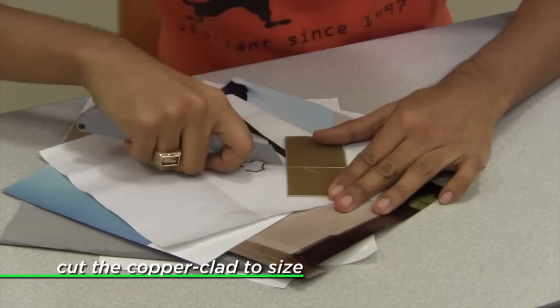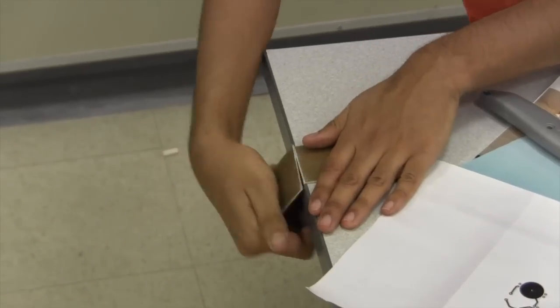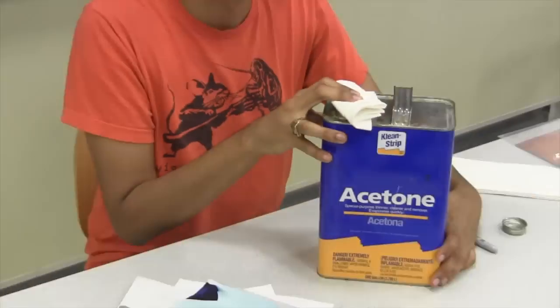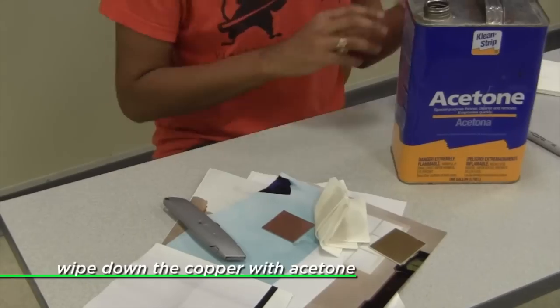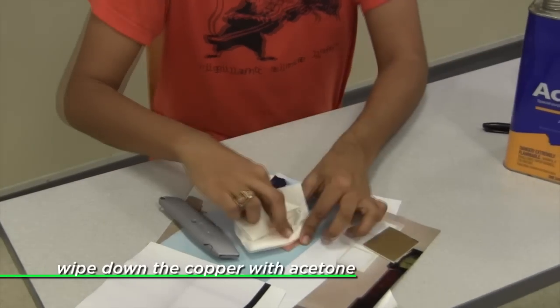We score it on both sides with a utility knife, and then it snaps pretty easily. We finish preparing this by wiping it down with some acetone to get rid of dirt and fingerprints.